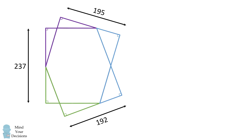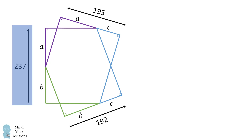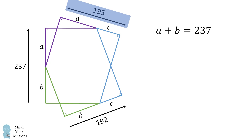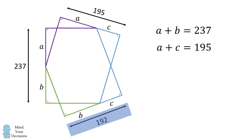Let's go back to our diagram. Suppose the long leg of the purple right triangle is equal to a, and the long leg of the green right triangle is equal to b. Suppose this leg of the blue right triangle is equal to c. We can now set up: a plus b equals 237, a plus c equals 195, and b plus c equals 192. We'll solve this system of equations for a, b, and c.